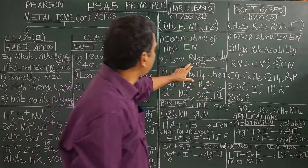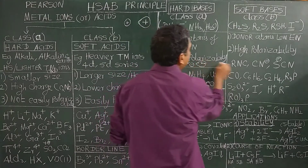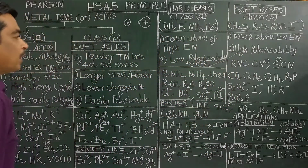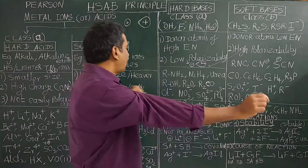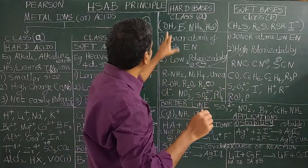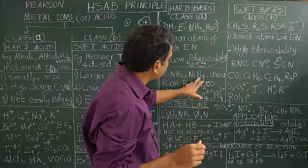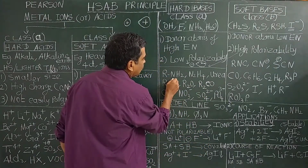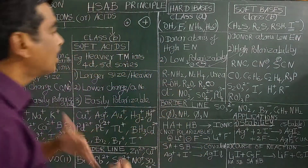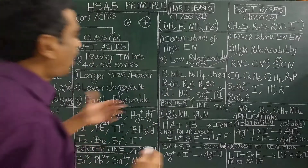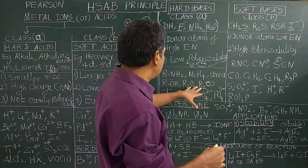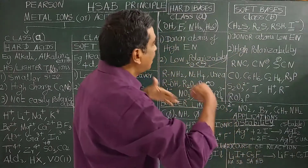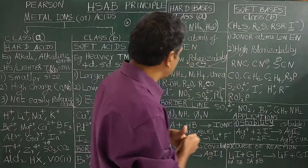Soft bases are highly polarisable. Examples include amines, ammonia, N2H4, urea, and R-OH where the donor atom is oxygen, which is more electronegative. R-SH has donor atoms of less electronegativity.